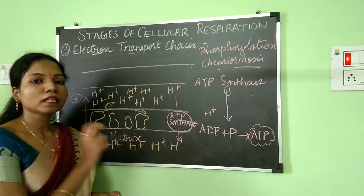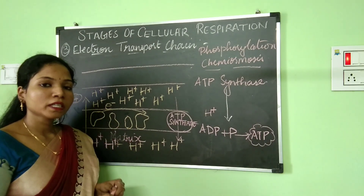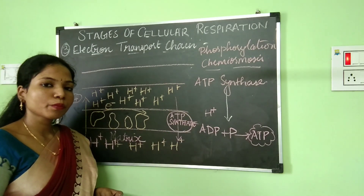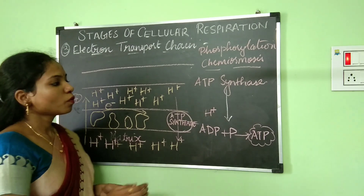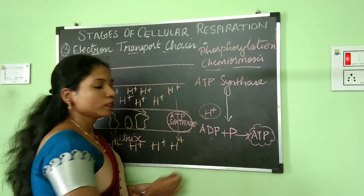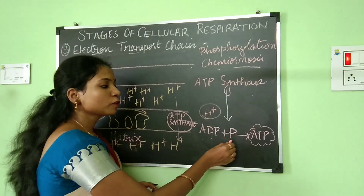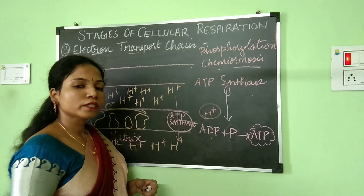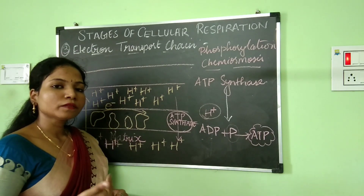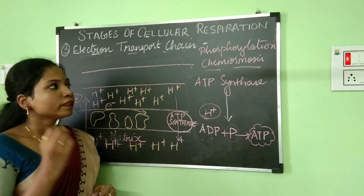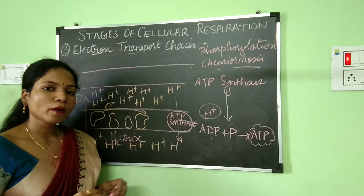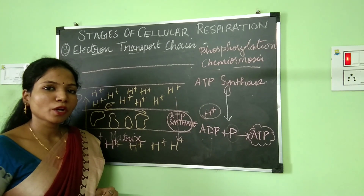The inner mitochondrial membrane is not permeable to ions, so ATP synthase helps bring hydrogen ions from the intermembrane space into the inner mitochondrial matrix. Once the hydrogen ions move into the matrix, ADP — adenosine diphosphate — is phosphorylated to form adenosine triphosphate, the energy currency of living organisms. This is how glucose is converted into ATP molecules. The stages of cellular respiration is a very important topic for your board exam. If you have any doubts, you can leave them in the comment section below.